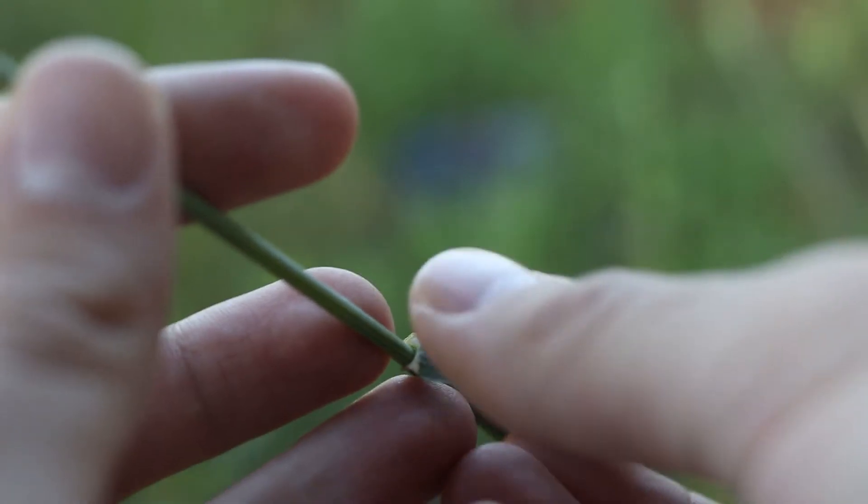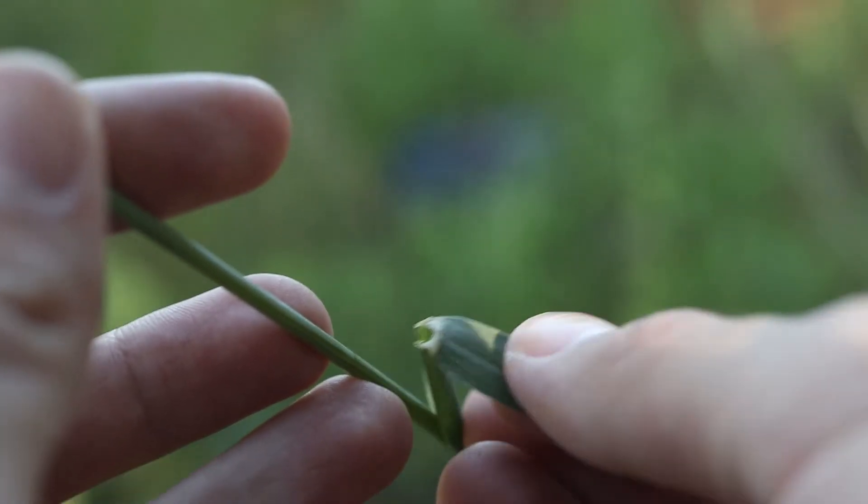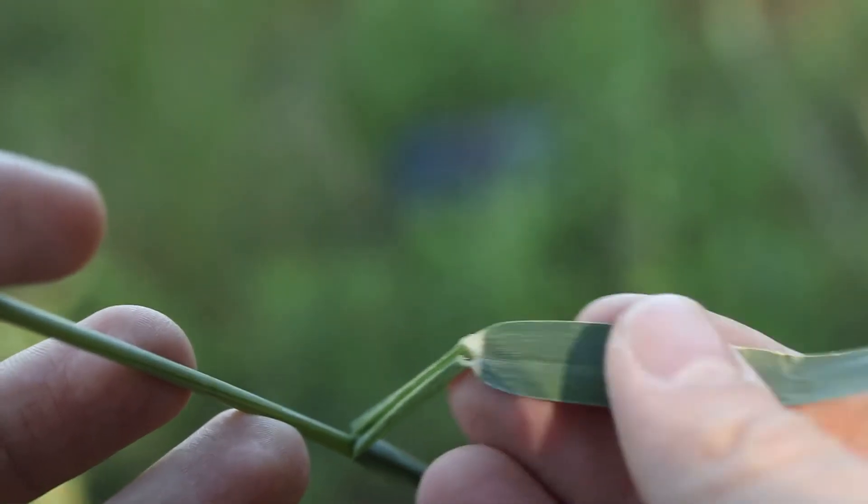The leaves are broad and rolled in the bud. They have a rough, hairless surface and have well-developed auricles with membranous ligules.